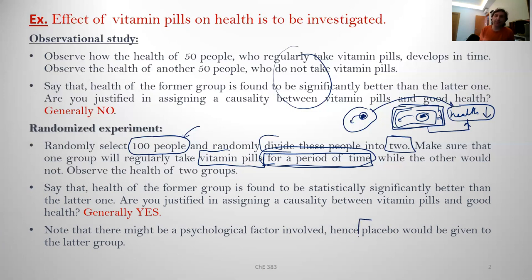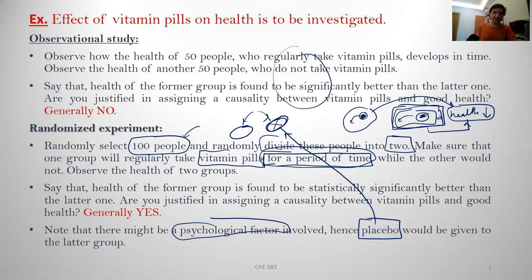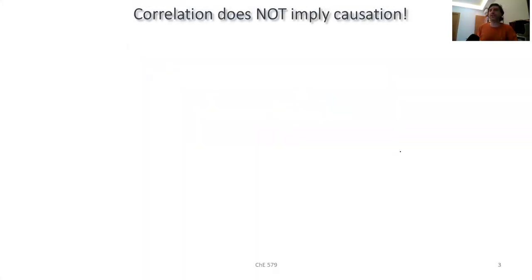In real life, we use what is called a placebo. You do not simply give the pill group a pill and give the other group nothing. Instead, you give the second group a placebo — the same pill but without any active ingredient, perhaps sugar or something that tastes bad but has no active material. The idea is to counteract psychological factors. The placebo effect is a very interesting phenomenon in its own right. Correlation does not imply causation.